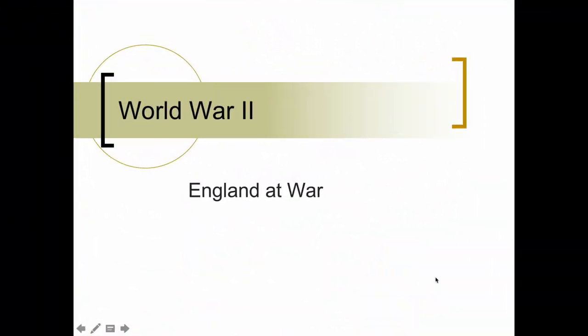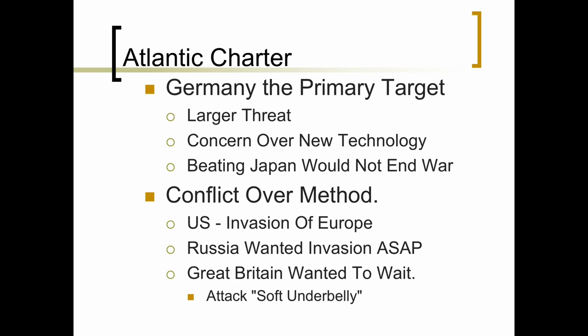If we look at England during World War II, once the battle gets underway, the primary target was to attack Germany first. Not only was it the larger threat, there was a concern over new technology that Germany was developing and how that would affect the rest of the world and the progress of the war. But the idea was if we attacked Japan first and defeated Japan, that still wouldn't end the war. It was only by defeating Germany first that the war would come to an end.